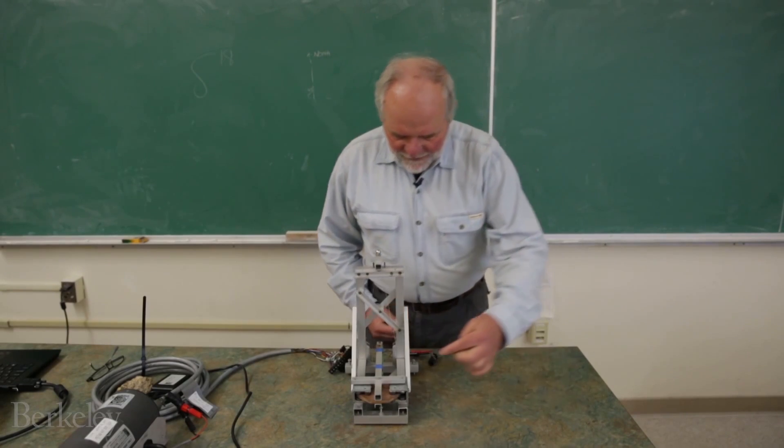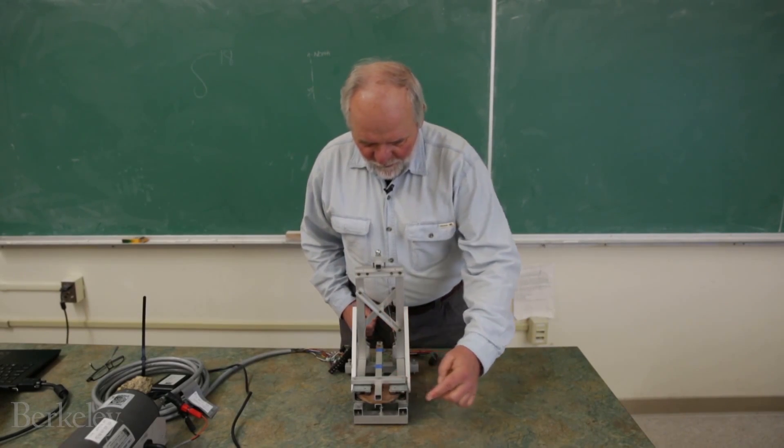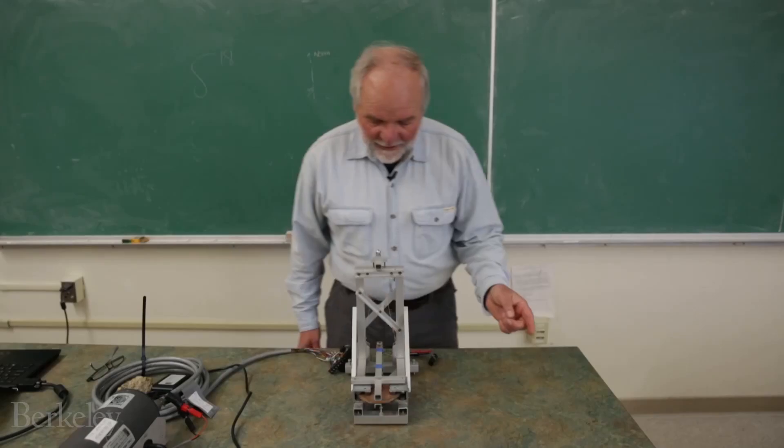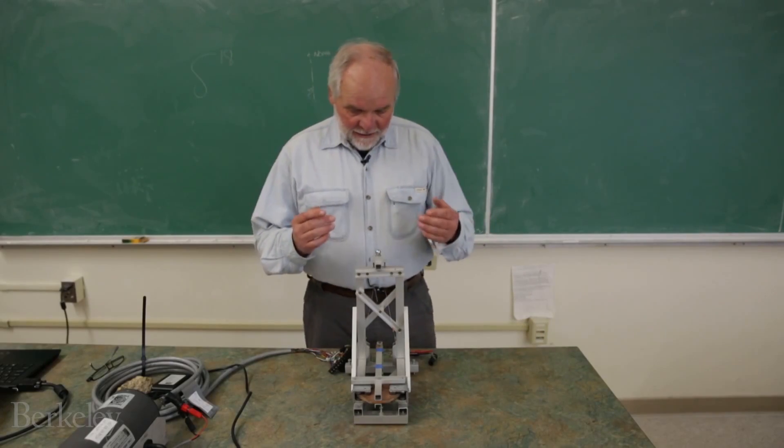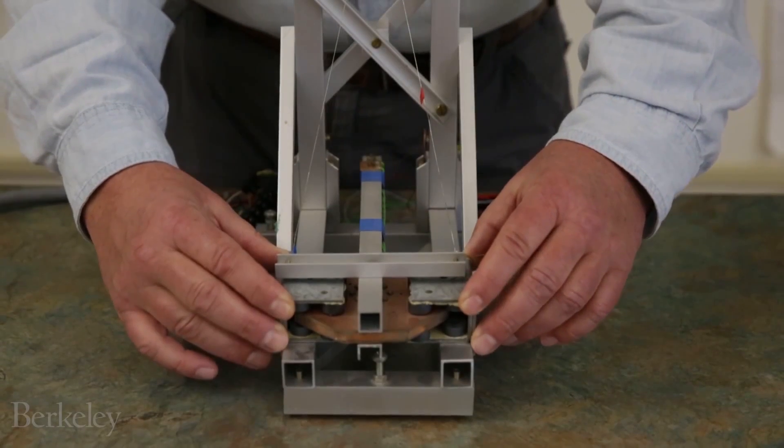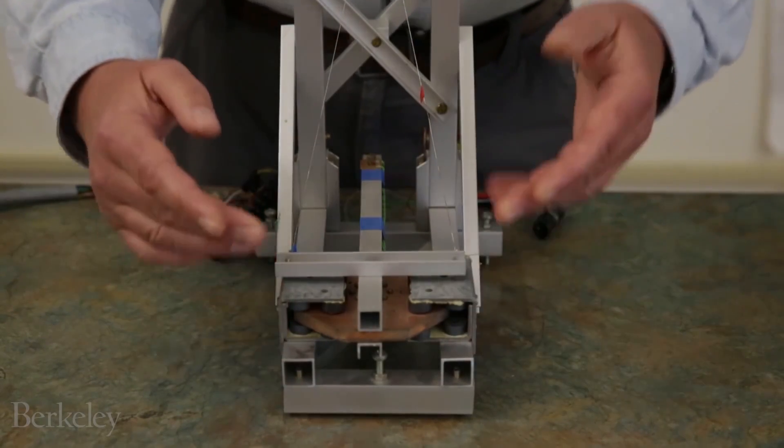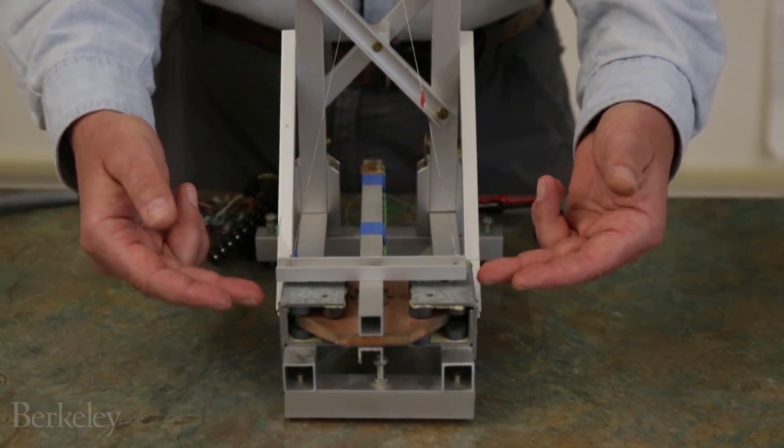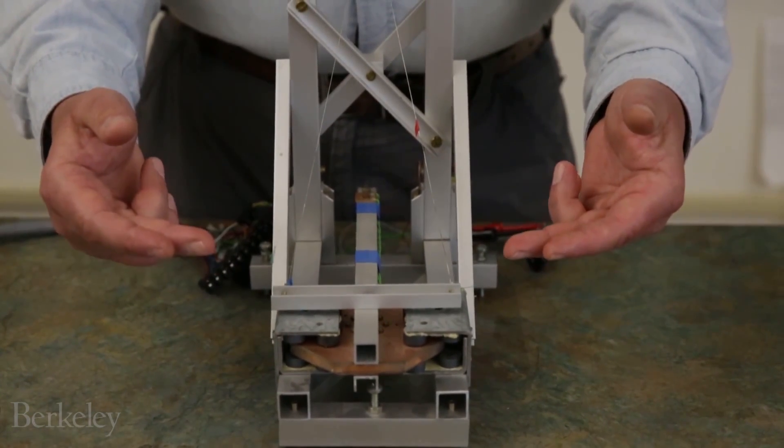then this boom would move back and forth like I'm inducing now. And we have a set of magnets in this part and a copper plate and copper wires in the copper colored part, which is the actual mass.